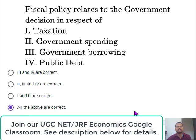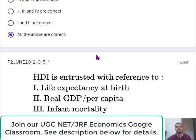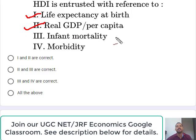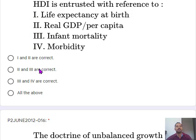The next question: HDI is measured with reference to which components. You need to memorize that there are three components in HDI: first is life expectancy, second is real GDP, and third is enrollment ratio. Since enrollment ratio is not given as an option here, only options 1 and 2 are correct — life expectancy and real GDP.